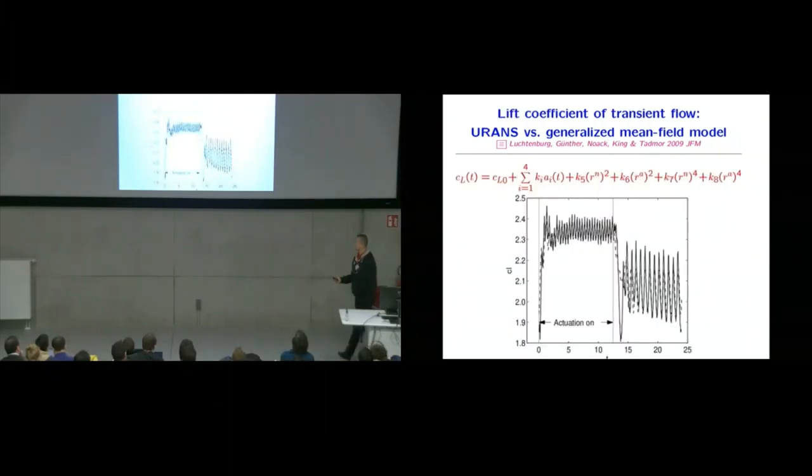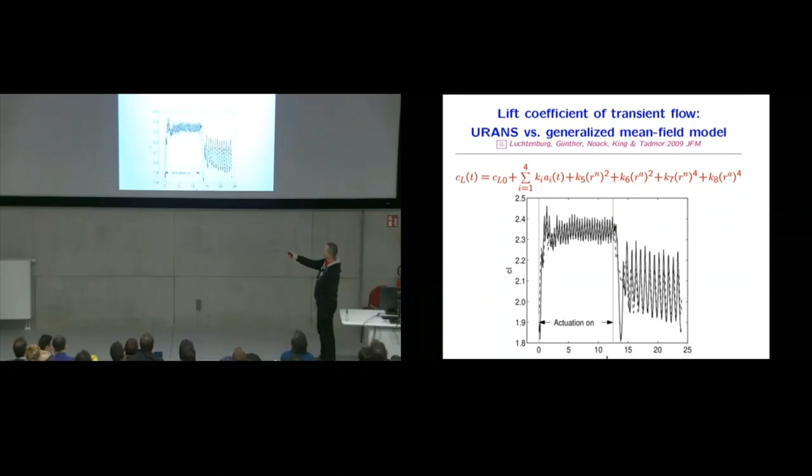Now we look at the lift. And when we plot the lift coefficient over the time, we turn the actuation on and the lift increases. We see already the high frequency signature here. Then we stop actuation and then it goes down. And then we see the fluctuation of von Karman vortex shedding. If we fit the lift coefficient with some expansion, we get a reasonably good reproduction. The dashed lines are what the model predicts and the solid lines are what the CFD predicts.